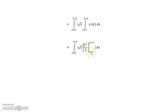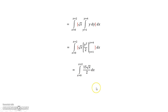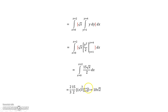Substitute your limits of y — and I like to write y equal 1 and y equal 4 explicitly, just to make it clear, because sometimes people accidentally substitute x instead of y. After substitution, you get a new expression that includes only x, and then you have a normal integral: integrate with respect to x, substitute the limits of x, and you get your final answer. This is how you do double integrals at the basic level.